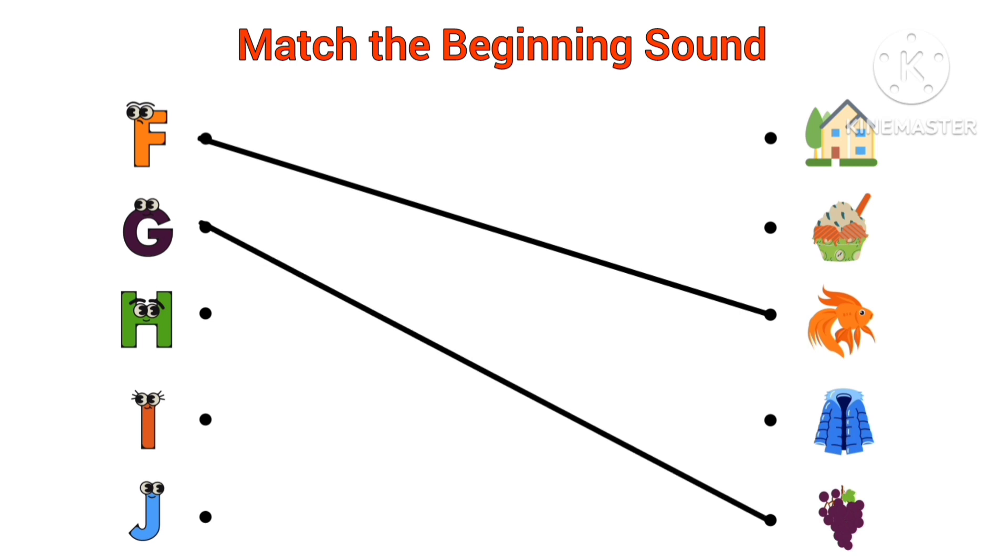G, G for grapes. Beginning sound of grapes is G. H, H for house. Beginning sound of house is H.